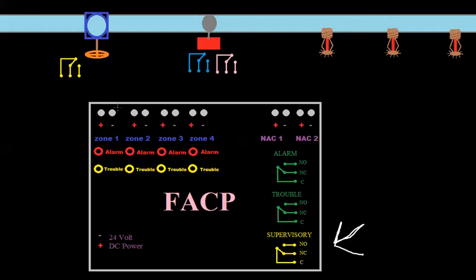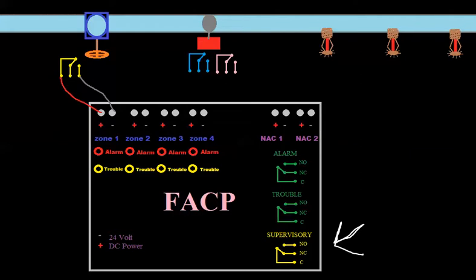The reason you have to know that ahead of time is it changes how you're going to wire the valve tamper. If this is set up for supervisory, we're going to wire it just like we would wire any smoke detector. These contacts are internal on the device monitoring the valve tamper. So we go positive to common, negative to normally open, and the panel still needs a resistor so we know if something happens to the circuit.